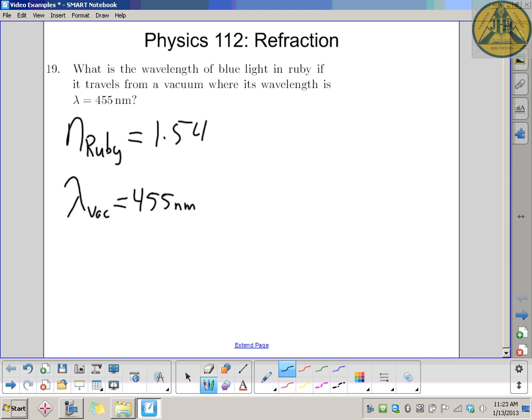The index of refraction of ruby is, by definition, the speed of light in perfect vacuum over the speed of light in ruby. Well, the speed of a wave can be broken down into frequency times wavelength, so it's frequency in a vacuum times the wavelength of blue light in the vacuum...